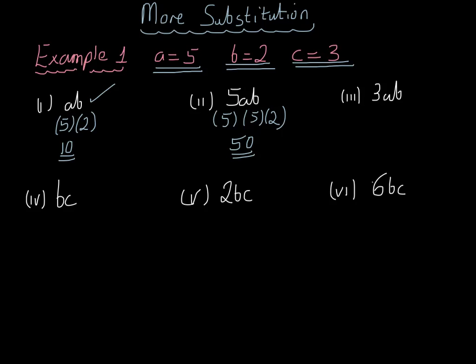3ab. Well, we could guess already that 3ab must be 30, because if ab is 10, 3 lots of ab is 30. But let's just check it works out. We would have 3 brackets 5 brackets 2. 3 times 5 is 15, 15 times 2 is indeed 30.